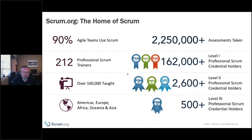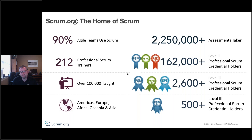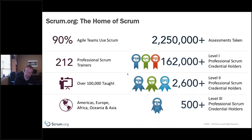As surveys have been done, there's an estimate that about 90% of Agile teams — which equals tens of millions of people — use Scrum in some way every day. Scrum.org has over 200 trainers around the world and we've taught over 100,000 students. We're global, with trainers on almost every continent, and we provide certification as well as training and thought leadership. We're founded by Ken Schwaber, the co-creator of Scrum, and Ken continues to drive Scrum forward.